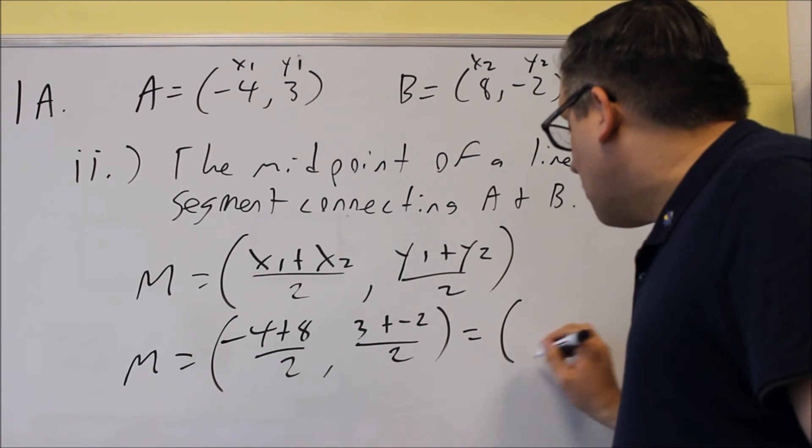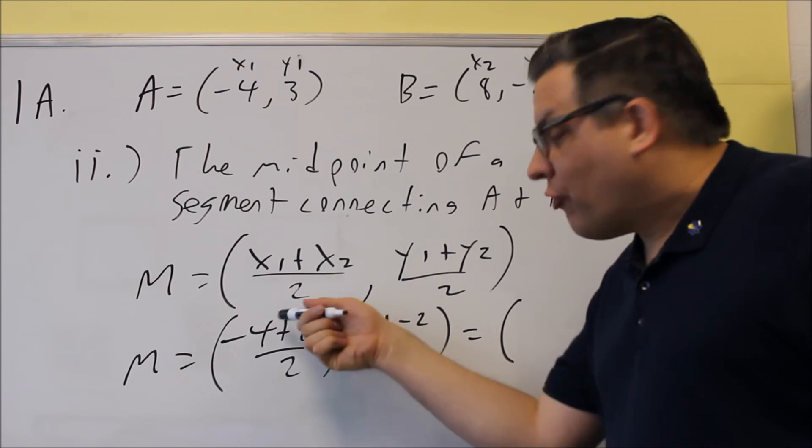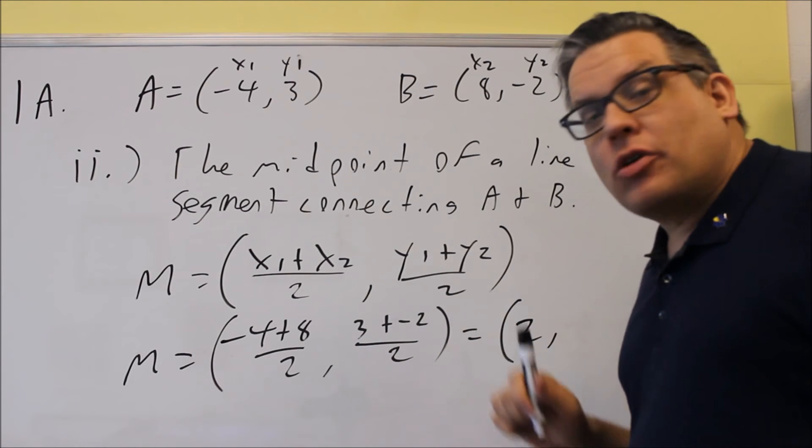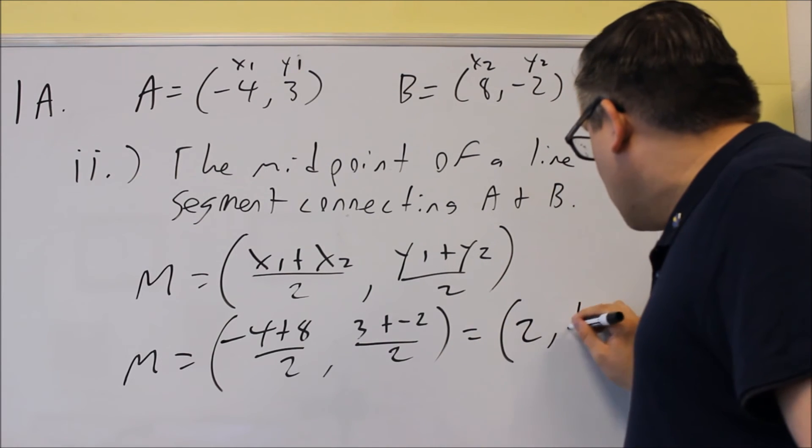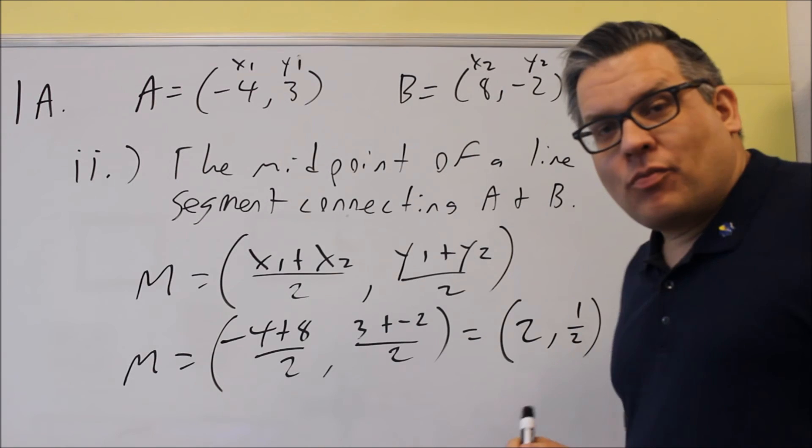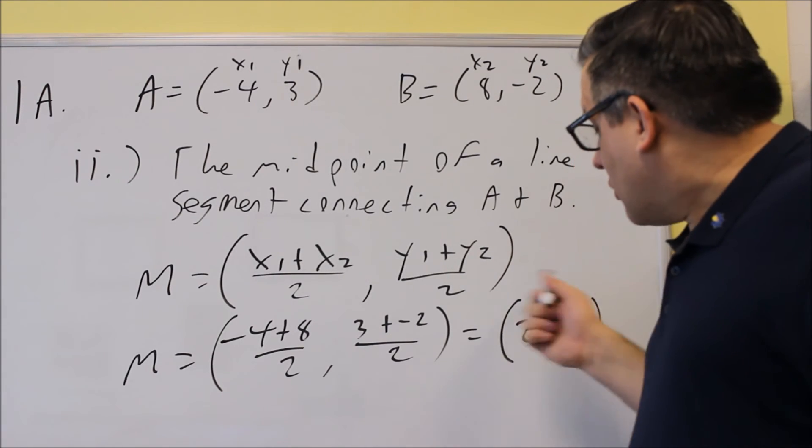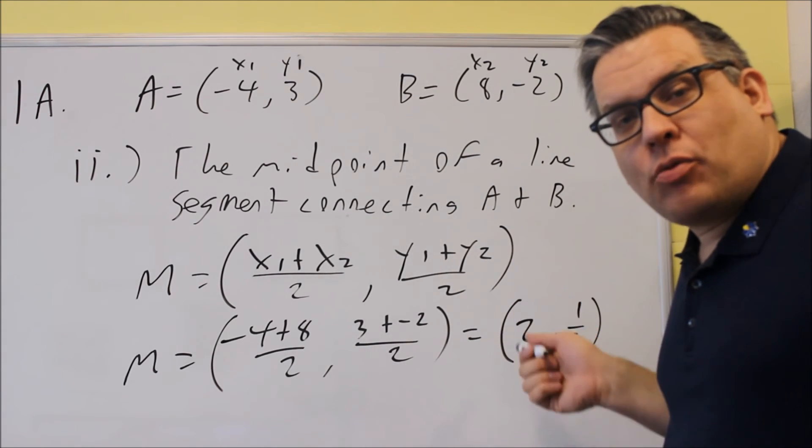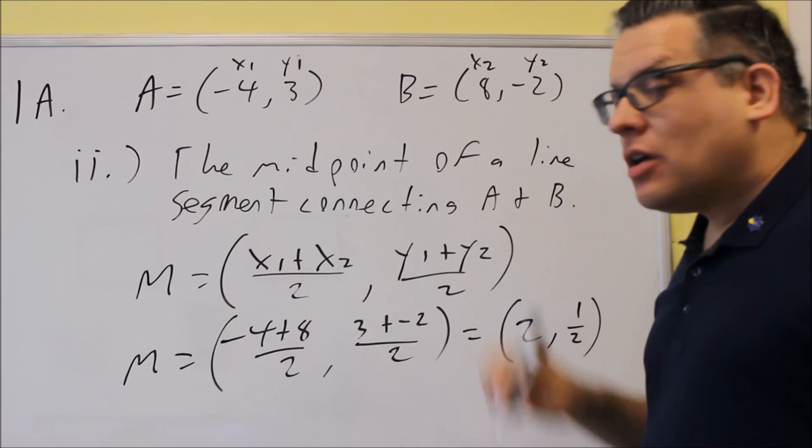Then that's going to simplify down. You're going to get 4 over 2, which is 2. And 3 minus 2 is 1, so we get 1 half. And then that would be your answer. Again, this point right here would be the point exactly halfway between A and B.